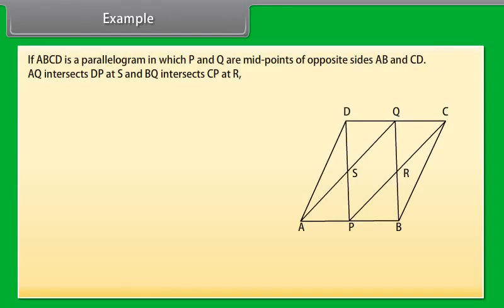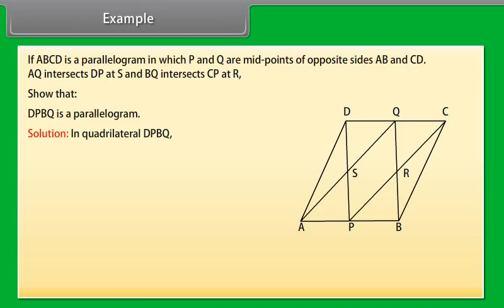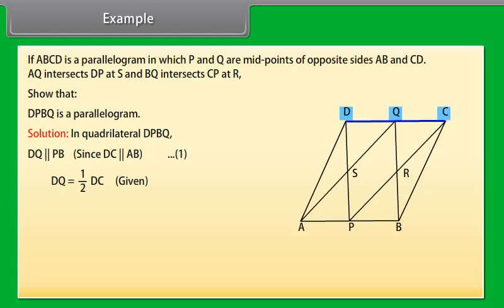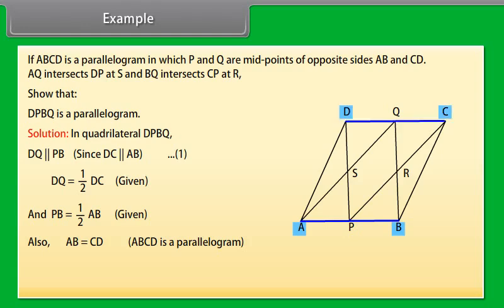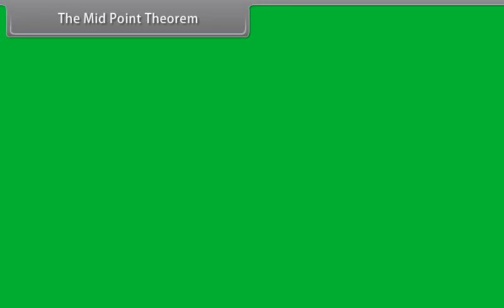Example: If ABCD is a parallelogram in which P and Q are midpoints of opposite sides AB and CD, AQ intersects DP at S and BQ intersects CP at R. Show that DPBQ is a parallelogram. Solution: In quadrilateral DPBQ, DQ is parallel to PB since DC is parallel to AB. DQ equals (1/2)·DC and PB equals (1/2)·AB (given). Since AB equals CD (ABCD is a parallelogram), DQ equals PB. Therefore from conditions 1 and 2, DPBQ is a parallelogram.